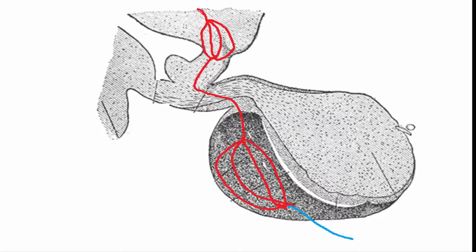The hypothalamus connects to the anterior pituitary using a vascular connection. Chemical signals — hormones — are made in the hypothalamus and gathered in the capillary network.